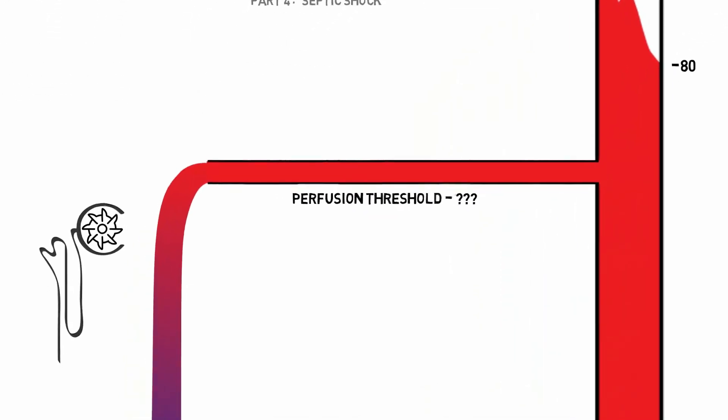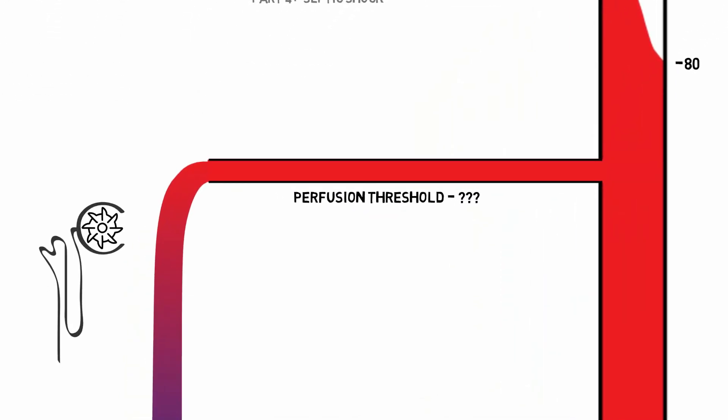However, a few general principles apply. Renal artery stenosis or carotid artery stenosis, for example, increase the artery's resistance to that organ, and therefore increases the kidney's or the brain's critical perfusion threshold. Long-standing hypertension can cause arterial sclerosis and increase the resistance at the tissue level, increasing the critical perfusion threshold.